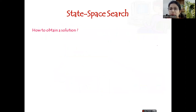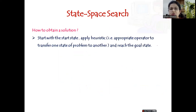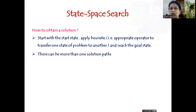How do we obtain a solution given a state space search of the problem? We start with the start state and apply the heuristic, which is the appropriate operator. The heuristic changes from problem to problem. For a specific problem, you apply the appropriate heuristic and try to reach the goal state. There can be more than one solution path.